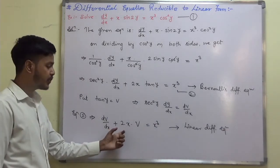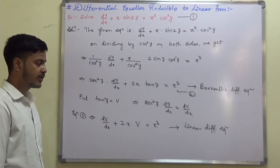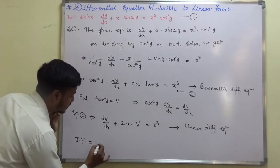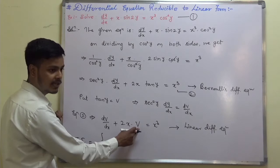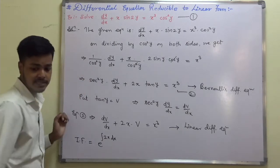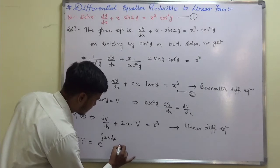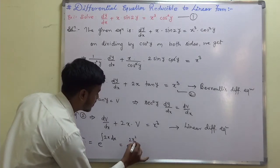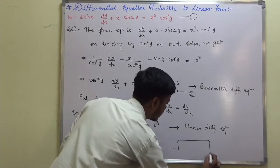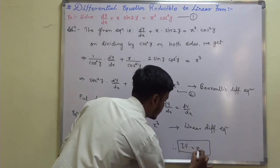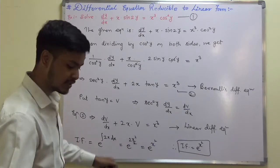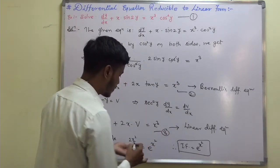Since this is a linear differential equation, we need to find the integrating factor first. The integrating factor equals e to the power of the integration of the coefficient of v, which is 2x dx. So integrating factor is e^(x²/2 · 2) = e^(x²). That is the integrating factor. Now write down the general solution.